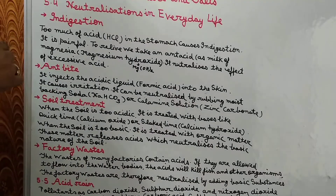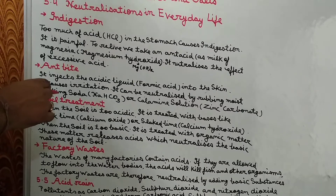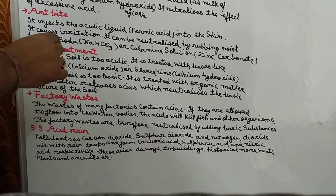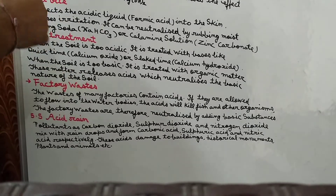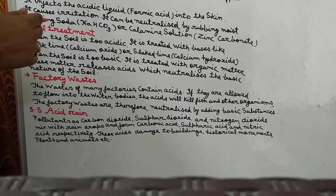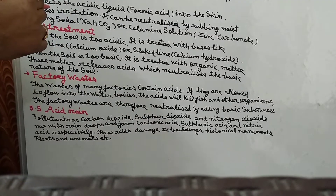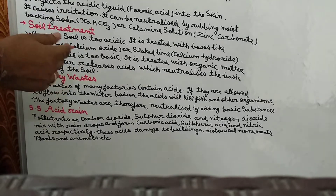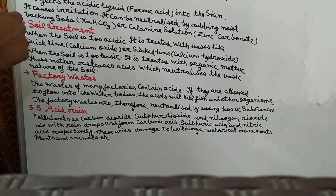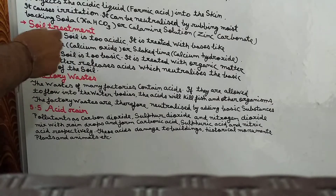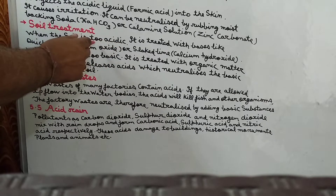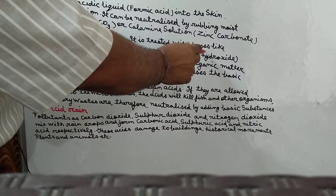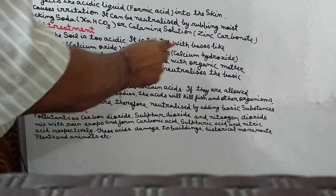The next point is soil treatment. To increase our agricultural production, we use fertilizers, insecticides, and pesticides — chemical substances — which can affect the acidity or basic nature of the soil. When the soil is too acidic, it is treated with a base such as quicklime or slaked lime, which is calcium oxide.